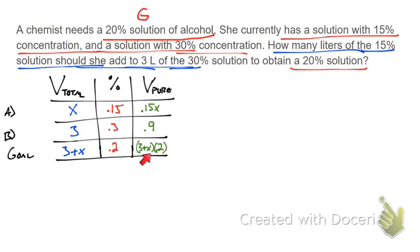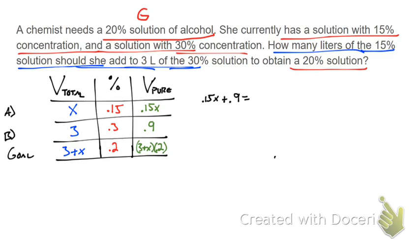Now we can set up our equation. The amount of pure alcohol from the first solution plus the amount from the second solution equals the pure alcohol in our final solution. So: 0.15x + 0.9 = (3 + x)(0.2). Let's solve this equation.